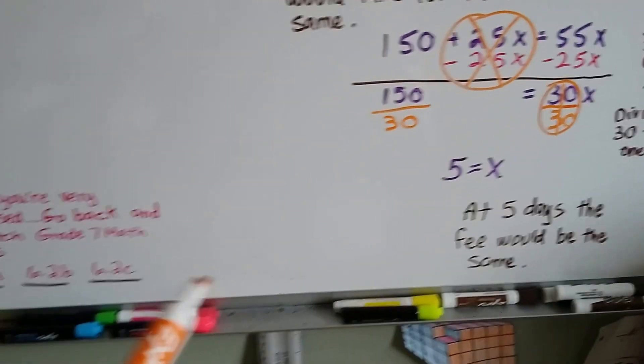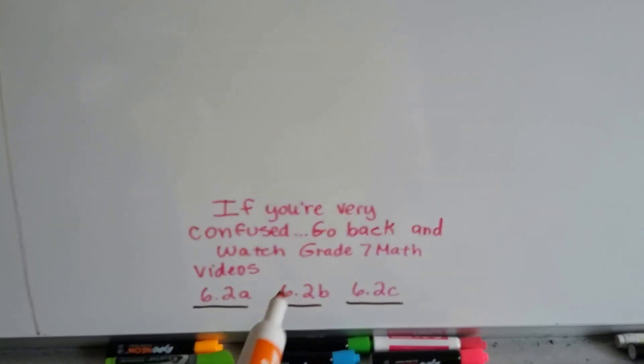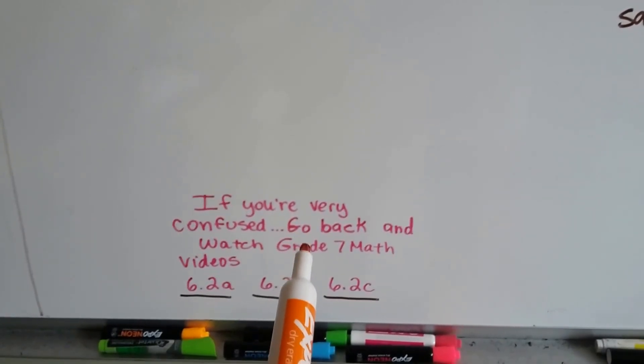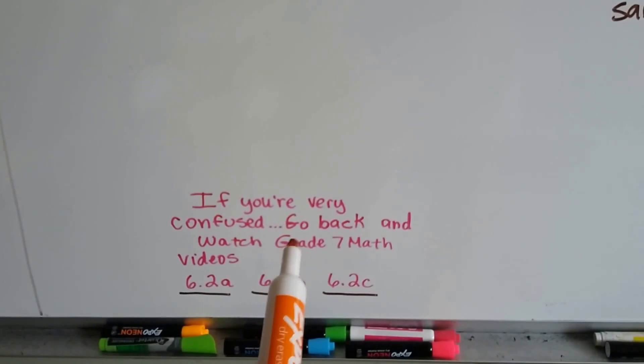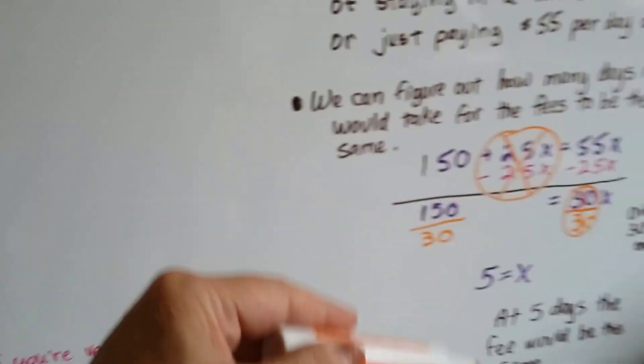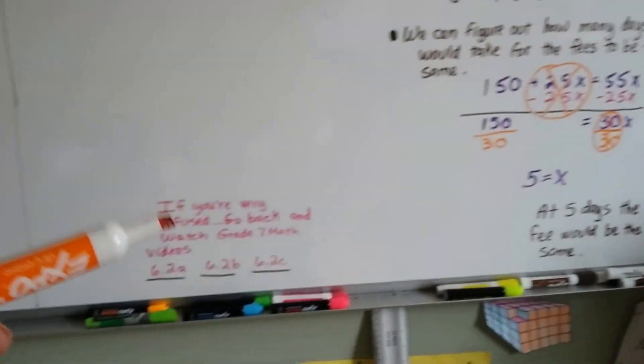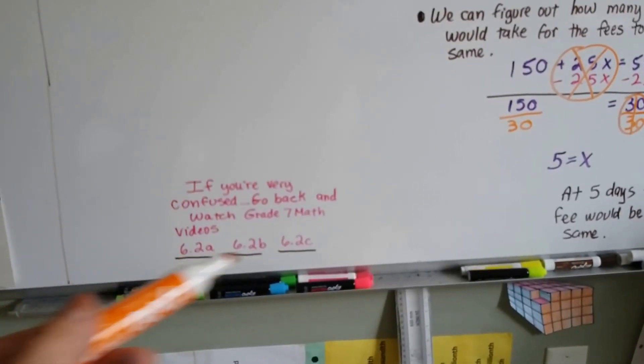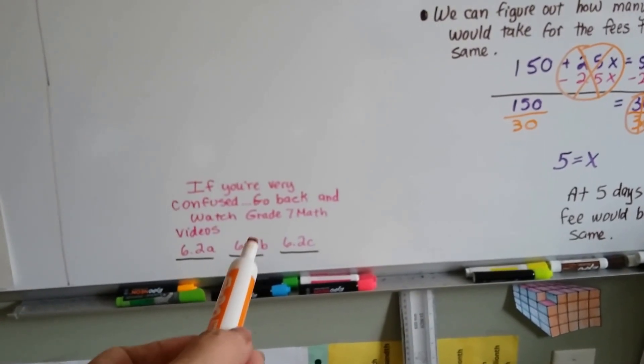Now if you're really, really confused, you need to go back and watch videos 6.2a, 6.2b and 6.2c in last year's portfolio profile video list for grade 7 math. This is grade 8 math. And if you didn't catch all of this stuff with the variables and using inverse operations, then you need to go back to the grade 7 math playlist and watch these three videos. This 6.2b will explain about the invisible one. That's really important.